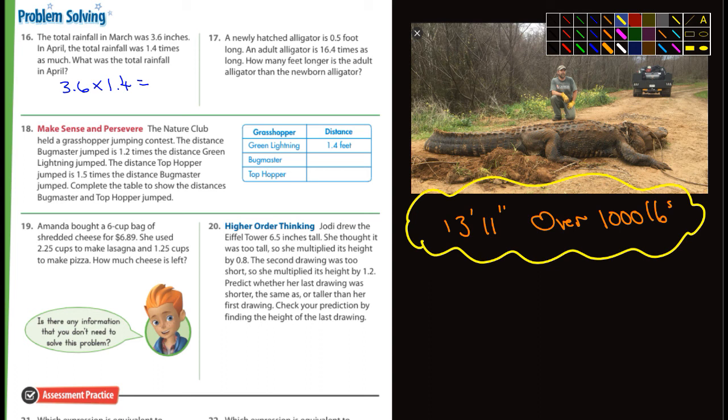So anyways, back to number 17 here. 17 says a newly hatched alligator is 0.5 of a foot, which is a half a foot long, so six inches. An alligator is 16.4 times as long. How many feet longer is the adult alligator than the newborn alligator? Well, what you're going to have to do is 16.4 times 0.5, and you're going to get an answer. And then it says how many feet longer is the adult alligator than the newborn? Remember the newborn is a half a foot. So your answer, you're going to have to compare your answer to a half a foot or six inches.